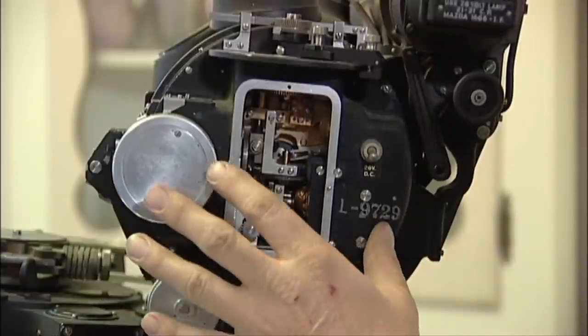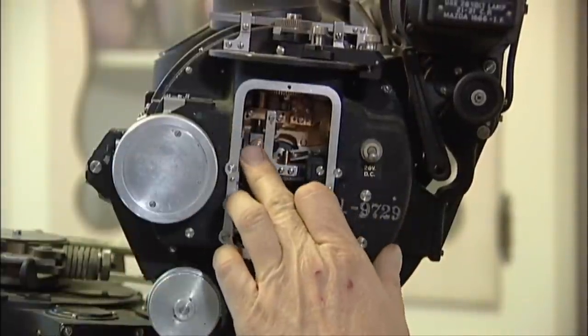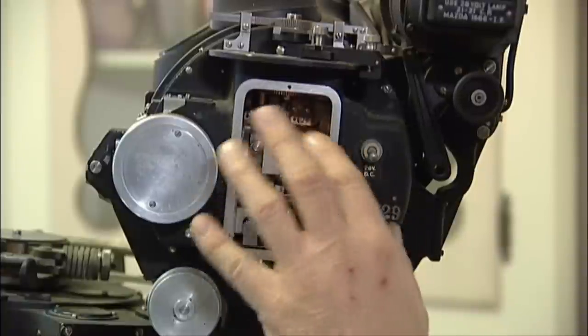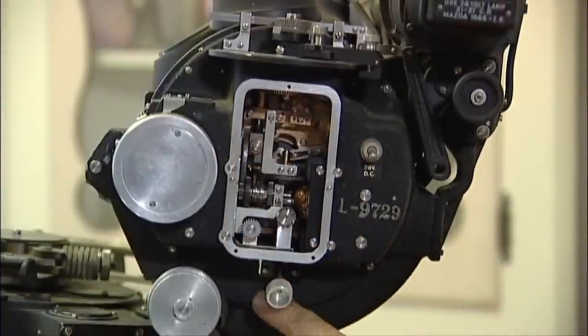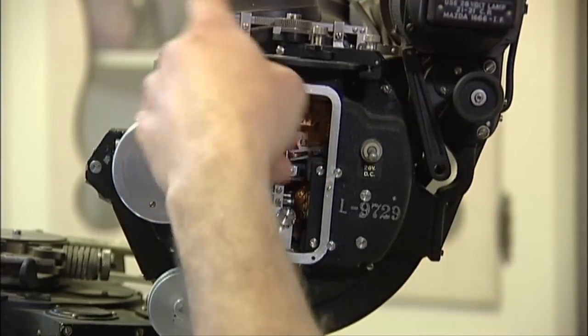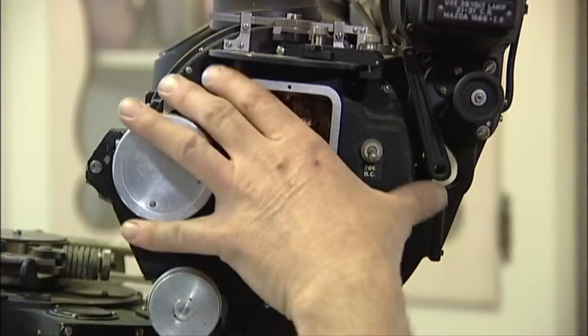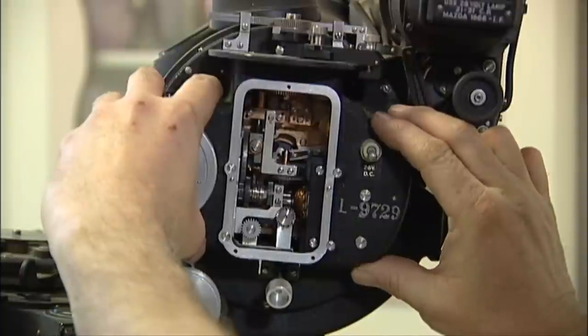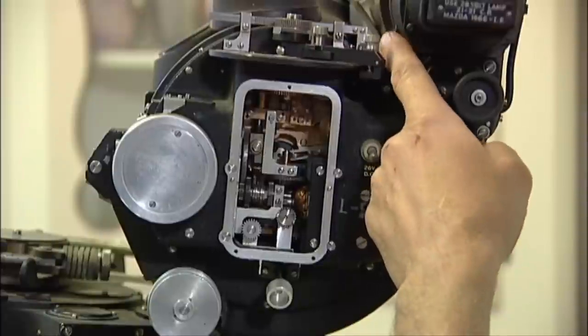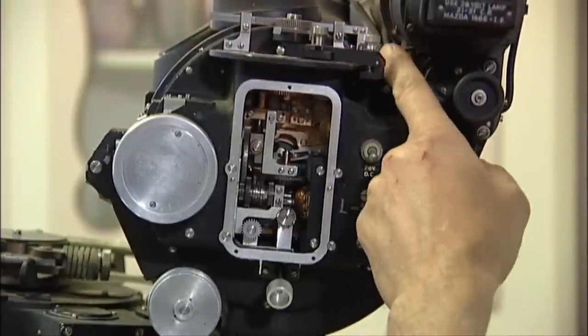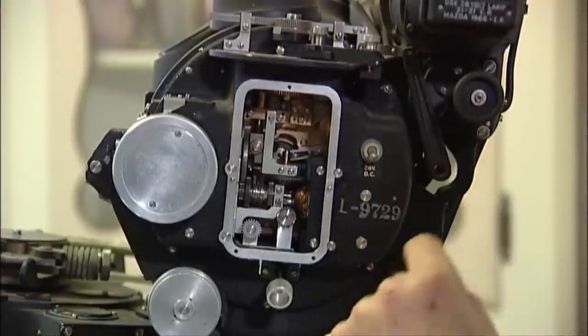If we need to go further, if this is gummed up and doesn't want to move freely, there's a set of several flathead screws around the perimeter of this unit here, and this whole thing comes off. Keep in mind, you have to disconnect the linkage to the trail here.